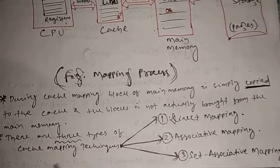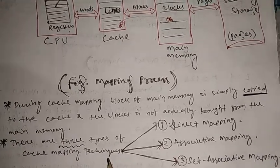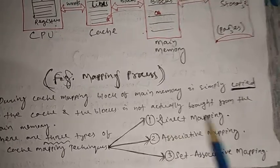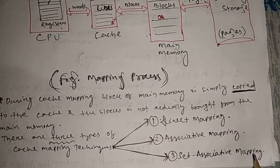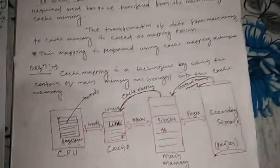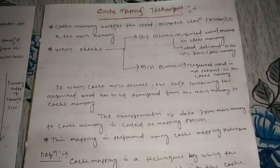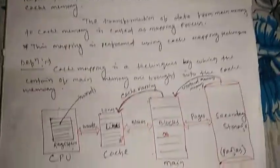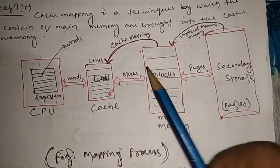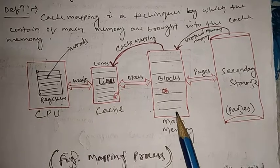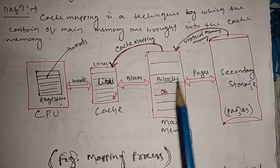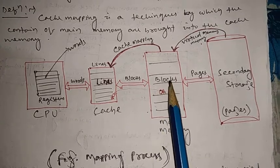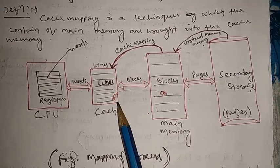There are three types of cache mapping techniques. One is direct mapping, second is associative mapping, and third is set associative mapping. Through these three techniques, we can perform cache mapping operations. Because there are many blocks and the size is huge, these techniques define how block information can be arranged into the smaller cache memory.